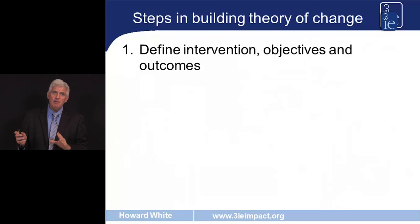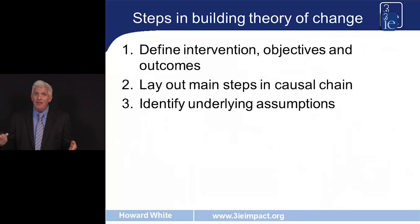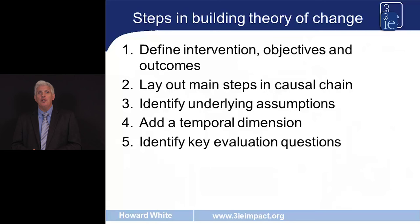So let's just repeat the steps in building the theory of change. First, be clear on the intervention, its objectives and outcomes. Second, draw out the causal chain and the underlying assumptions. Third, add the temporal dimension. Fourth, identify your evaluation questions. And finally, validate and revise the theory of change. Thank you for listening to this talk. I hope you'll take the quiz associated with this talk and go on to listen to subsequent talks, and encourage your friends and colleagues to do so also.